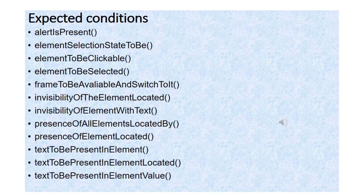Here we have different types of expected conditions, and we will choose any situation we need. For example: alert is present, element to be clickable, title is, title contains, visibility of all elements, visibility of all elements located by, visibility of elements located. There are different types of expected conditions — if you want to use any type, you can choose accordingly.